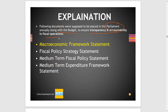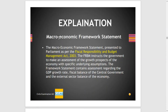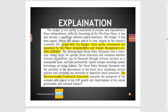The following documents are supposed to be placed in parliament along with the budget to ensure transparency and accountability in fiscal operations: the Macroeconomic Framework Statement, Fiscal Policy Strategy Statement, Medium Term Fiscal Policy Statement, and Medium Term Expenditure Framework Statement. If you simply read the macroeconomics NCERT of Class 12, you can see it is talking about the FRBM Act 2003 and the Macroeconomic Framework Statement.